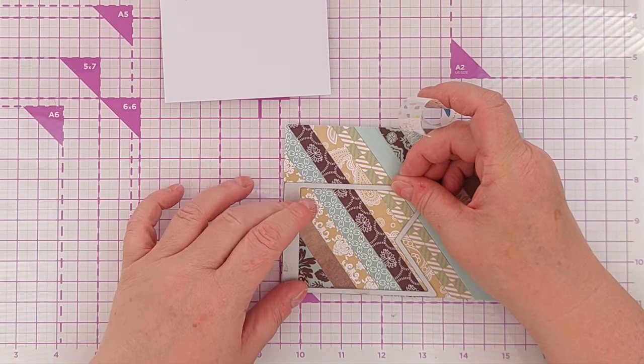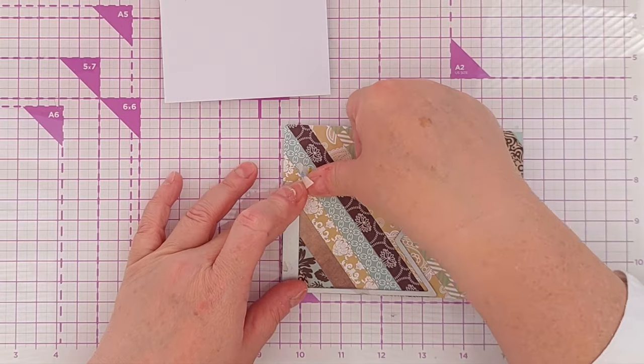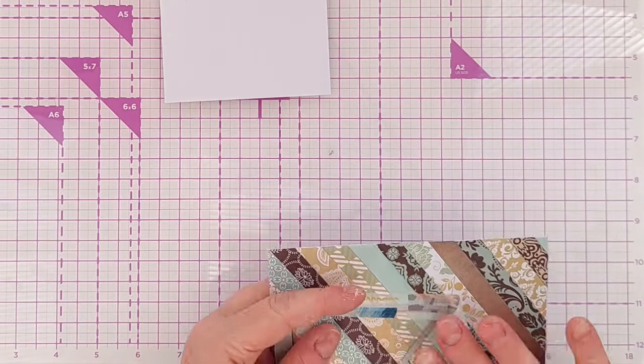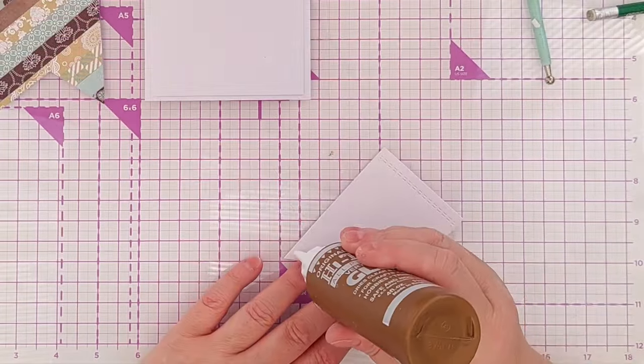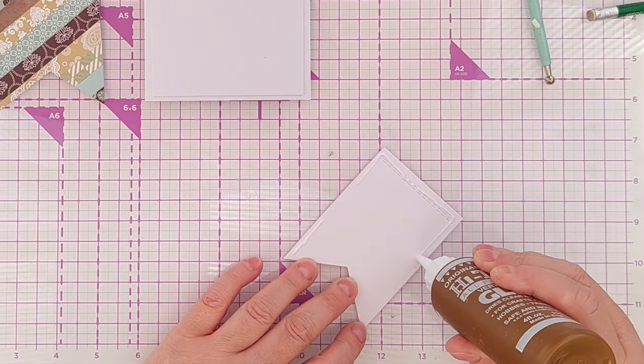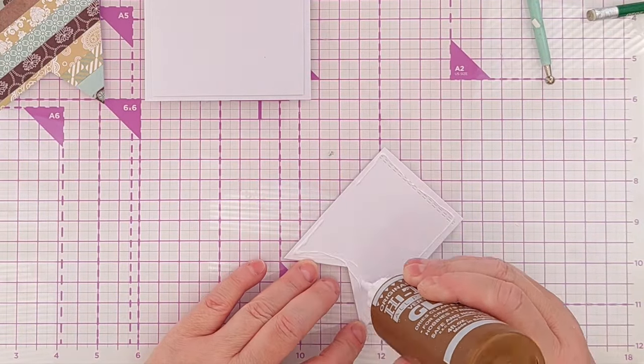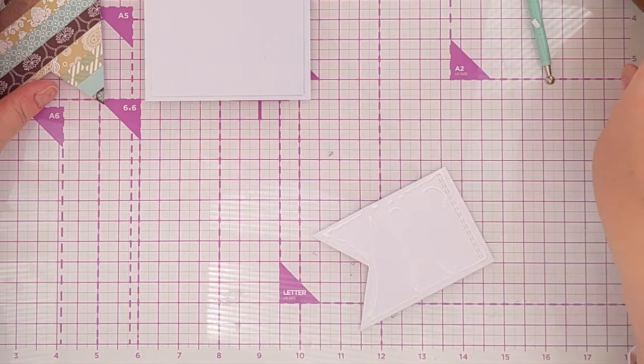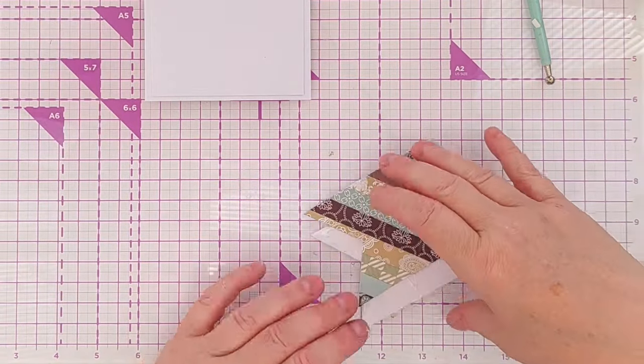I wanted to give this a little bit of extra dimension before I popped it on my card, but I didn't want to add a whole layer of foam tape, so I cut another banner from smooth white cardstock and stuck that on the back of my patterned banner. I then glued that to my card blank.